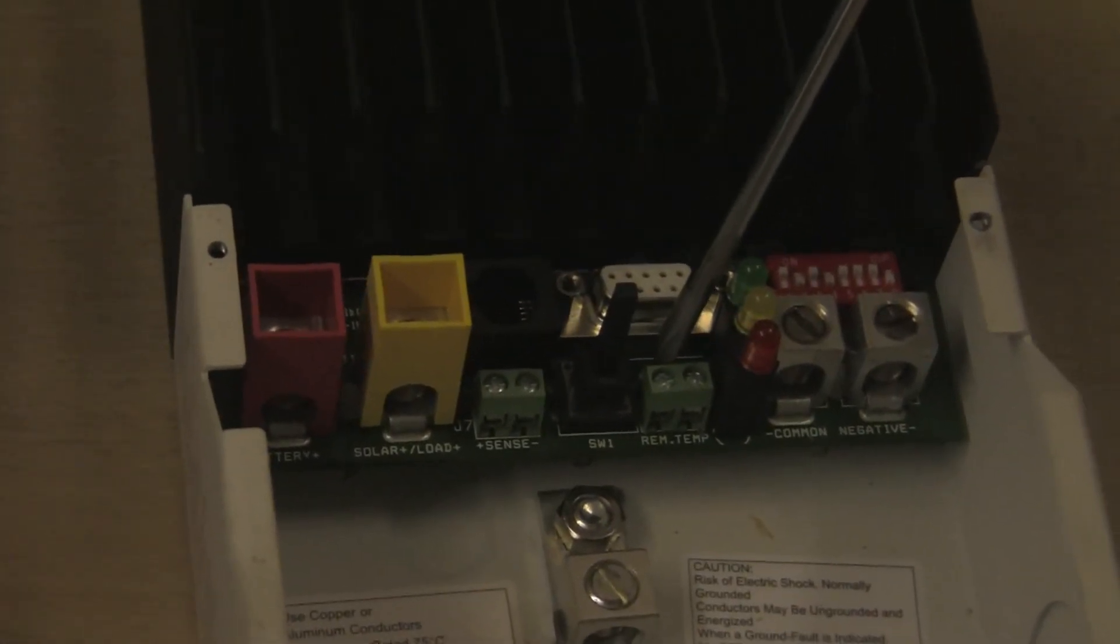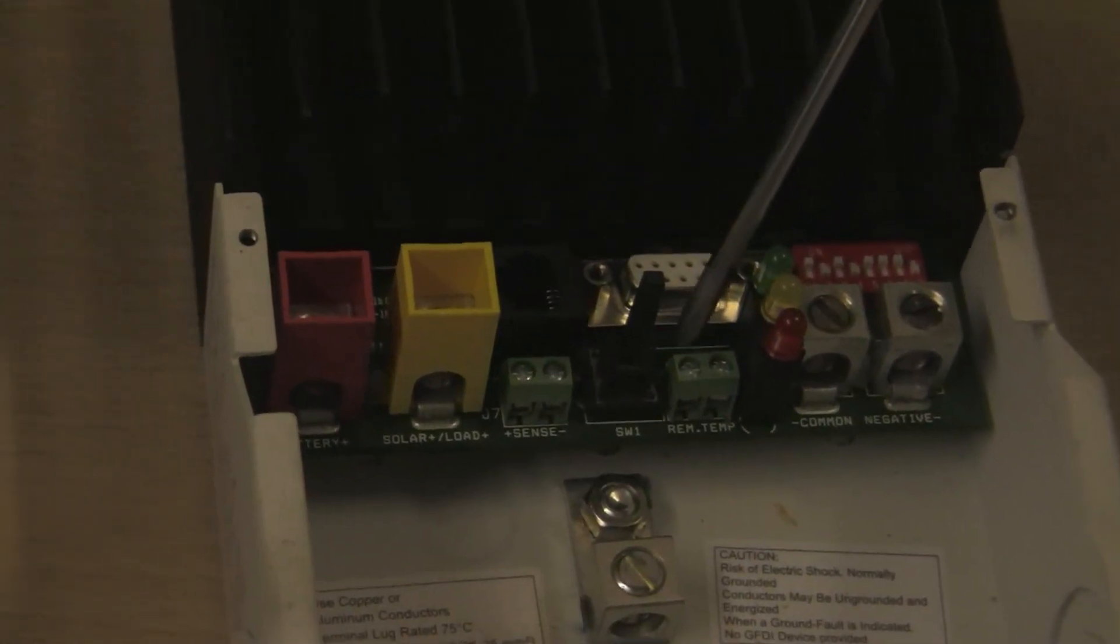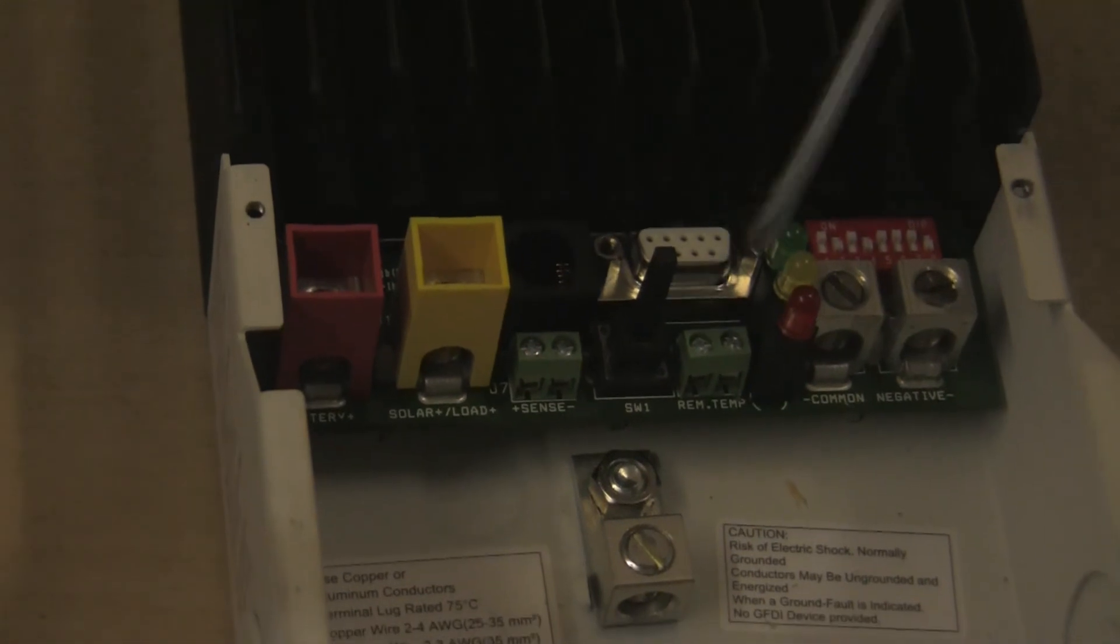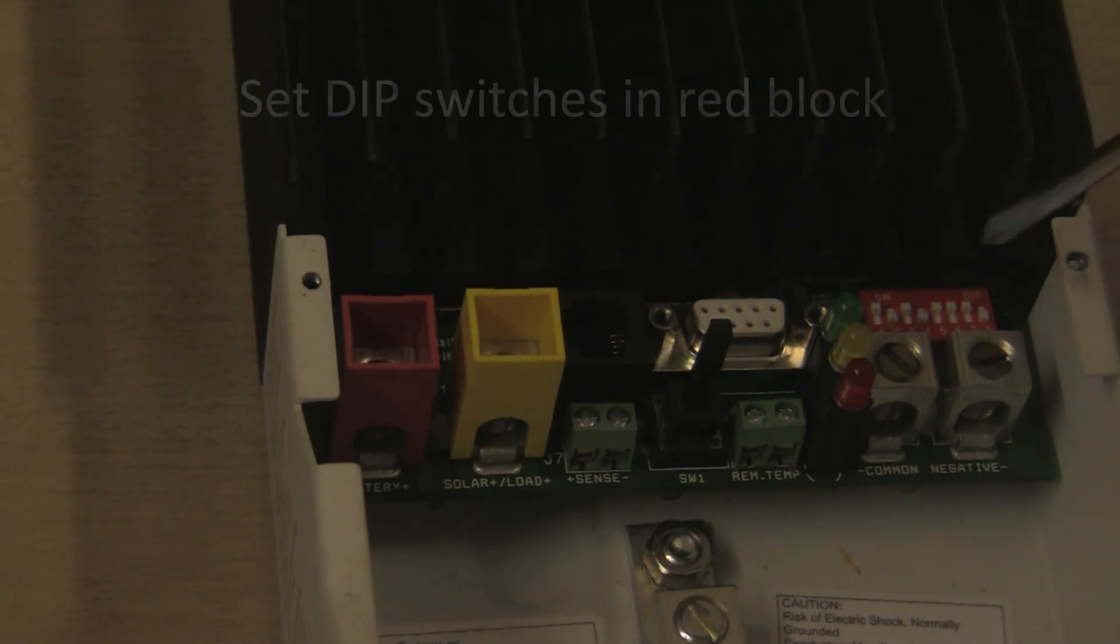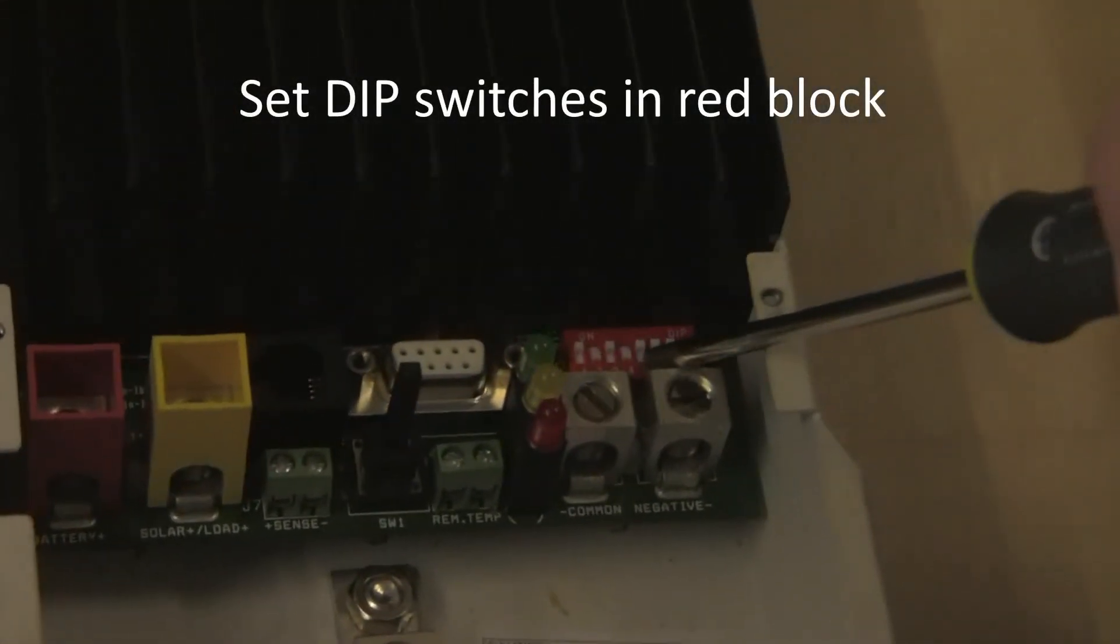And then finally we have a set of terminals marked REM temp. That's for a remote temperature sensor, and that's used when temperature differentials want to be monitored so that your batteries are charged perfectly for the given temperature. Then we have the bank of dip switches, this red block here.